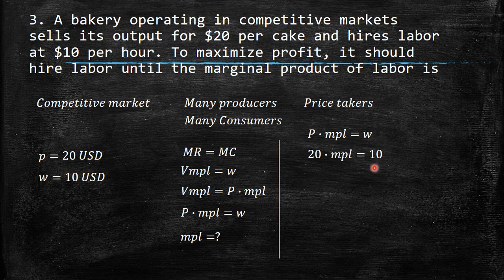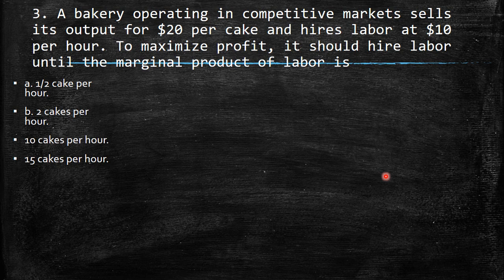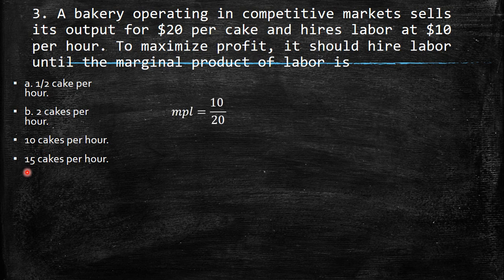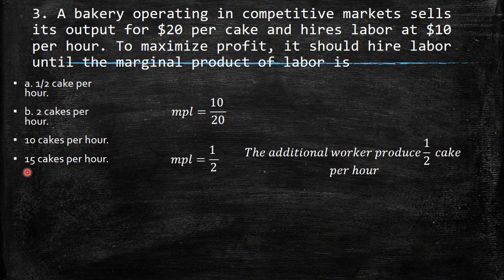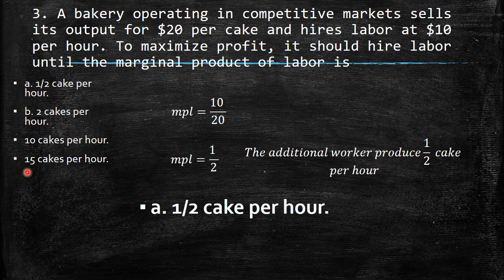We have price times marginal product of labor equal to W. Substituting: 20 × MPL = 10, so MPL = 10/20 = 1/2. The options are: half a cake per hour, two cakes per hour, 10 cakes per hour, and 15 cakes per hour. The marginal product of labor is 1/2 cake per hour — meaning the additional worker produces half a cake per hour. That is the answer.